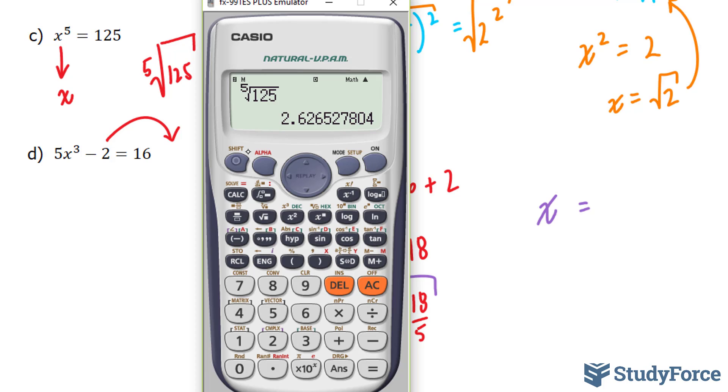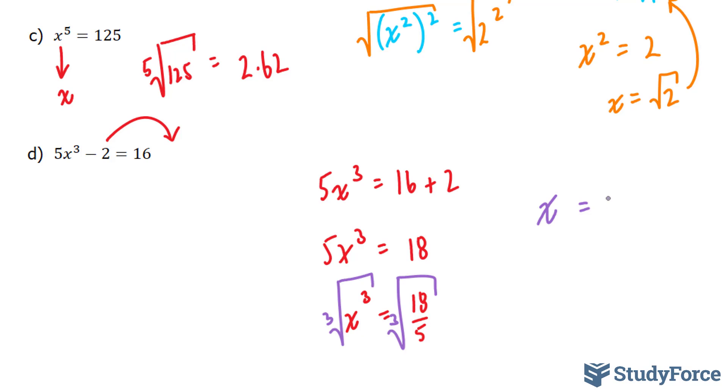And on the right side, well, let's use our calculator. The third root of 18 divided by 5 gives me approximately 1.53. So there you have it.